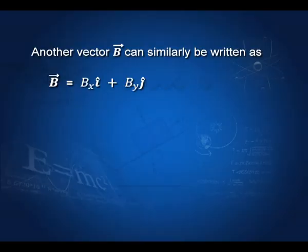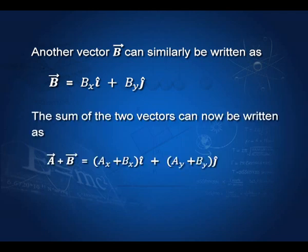Another vector B can similarly be written as vector B equals B x times i-cap plus B y times j-cap, where B x and B y are the components along the x and y axes. The sum of these two vectors is vector A plus vector B equals A x plus B x times i-cap plus A y plus B y times j-cap.